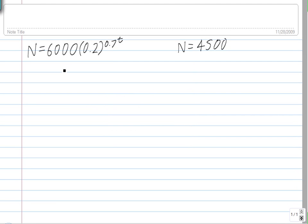On number five, you're given the equation n equals 6,000 times 0.2 to the 0.7 power to the t power. And you're asked to find what t is when n equals 4,500. So replace n with 4,500.